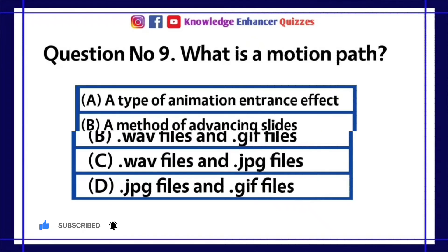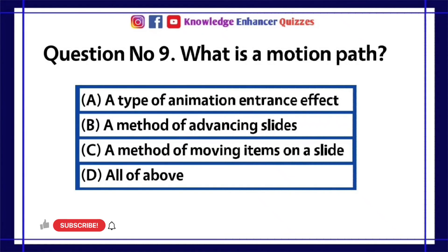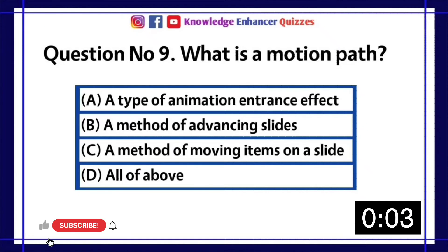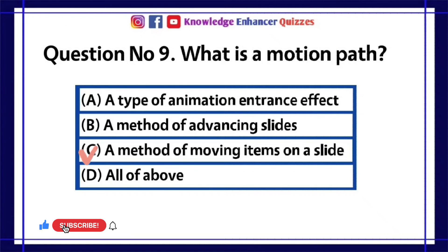Question number 9. What is a motion path? A. A type of animation entrance effect. B. A method of advancing slides. C. A method of moving items on a slide. D. All of the above. Option C is the right answer.